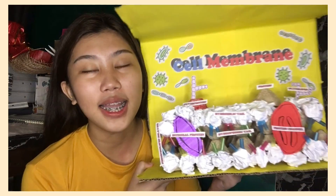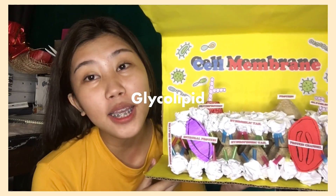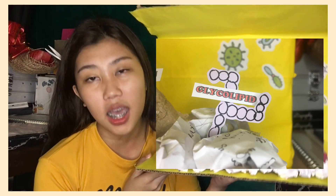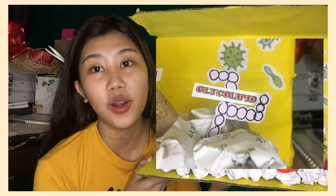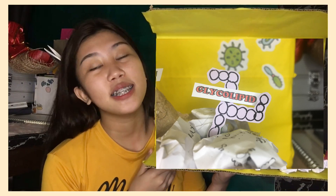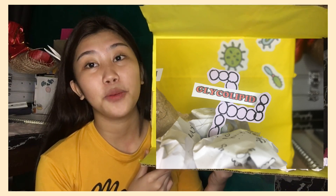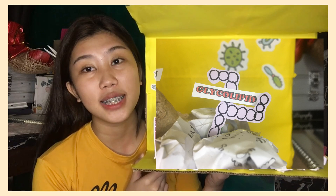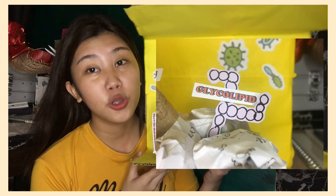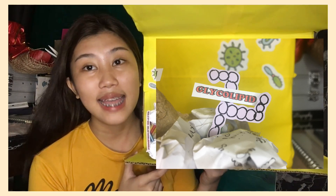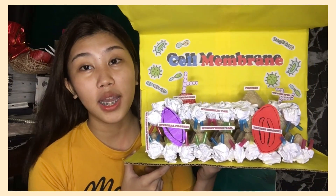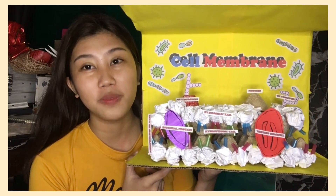The next one is Glycolipids. Glycolipids are lipids with a carbohydrate attached by a glycosidic bond, or covalent bond. Their role is to maintain the stability of the cell membrane and to facilitate cell recognition, which is crucial to the immune response and in the connections that allow cells to connect to one another to form tissues.